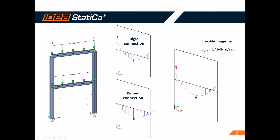But if we add flexible hinges on the ends of the beam — here and here — with a certain value of flexibility, for example 17 MNm per radian, and recalculate the project, the load is redistributed and the values of internal forces are different than in the first step. The flexibility of the connection has a major impact on the internal forces.